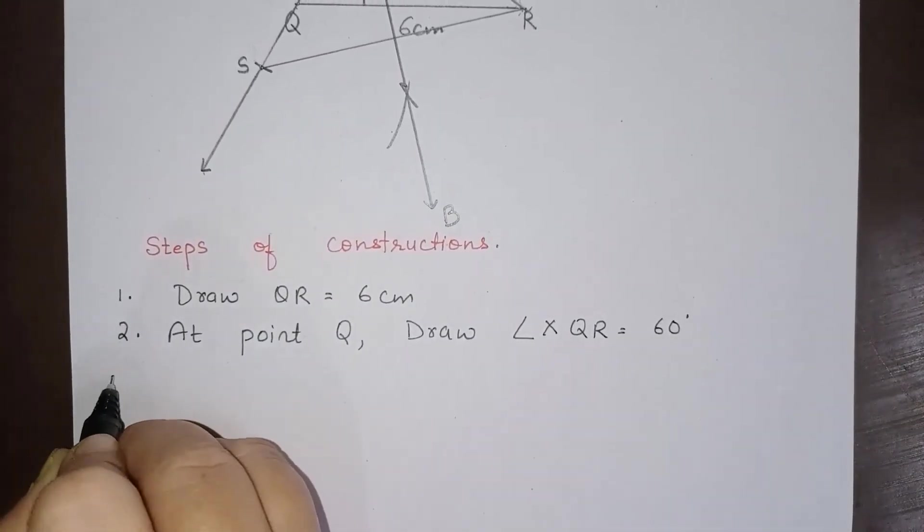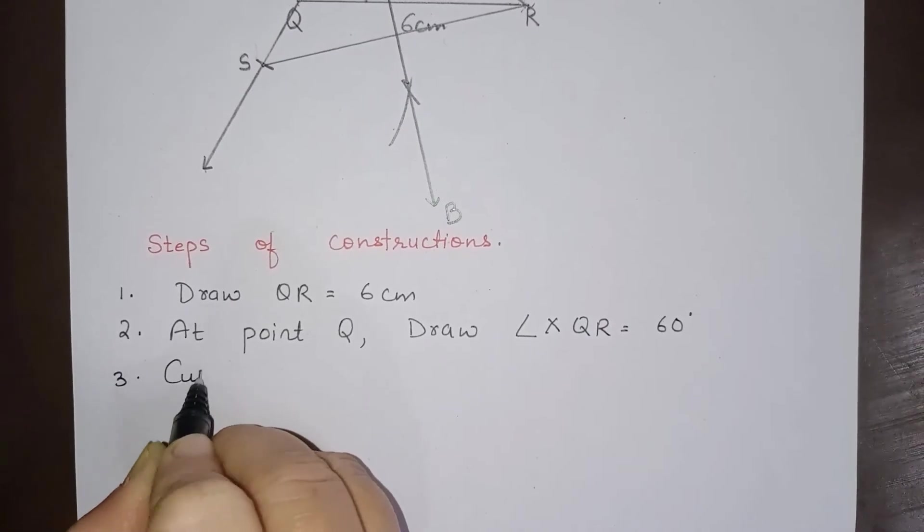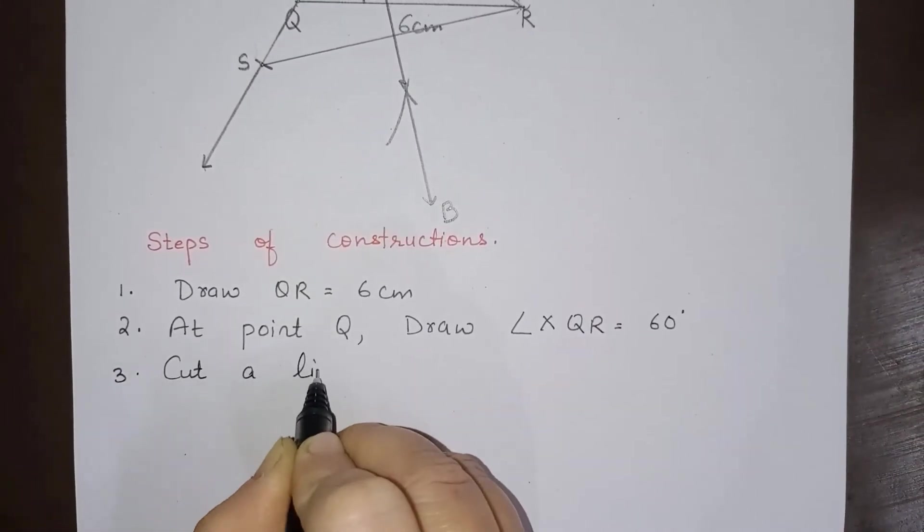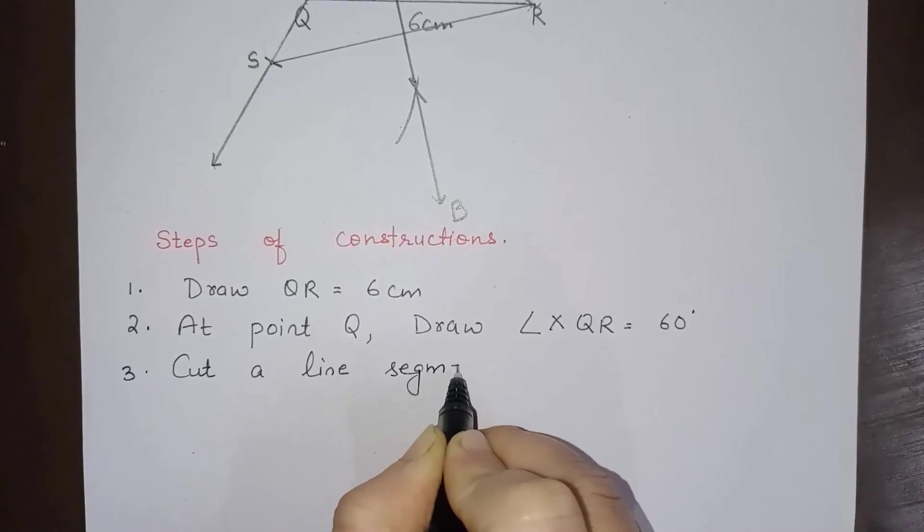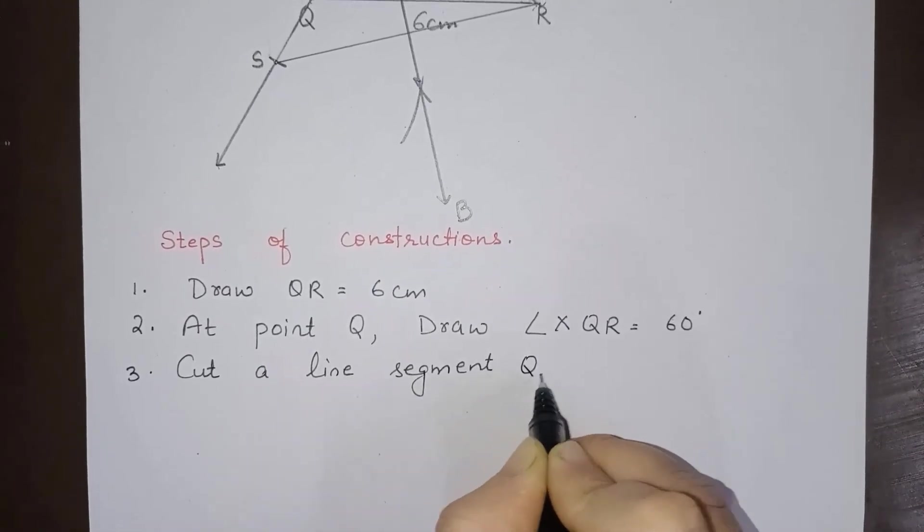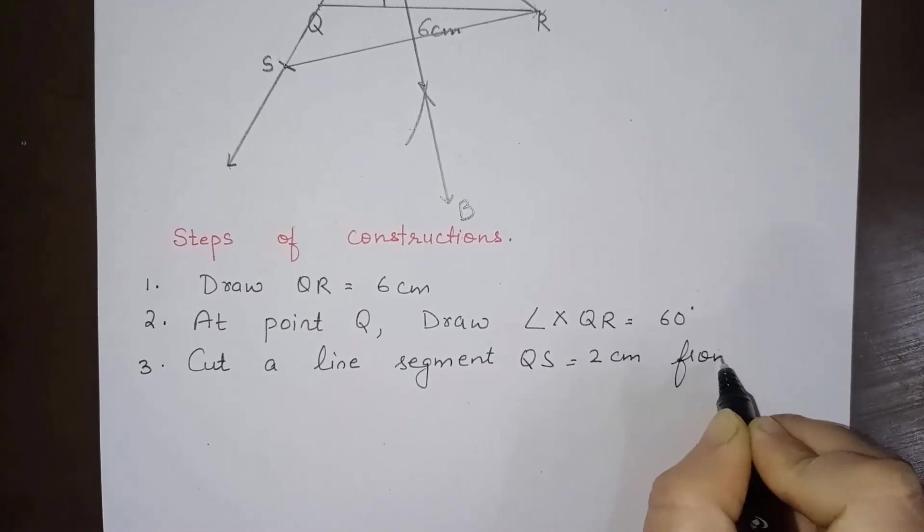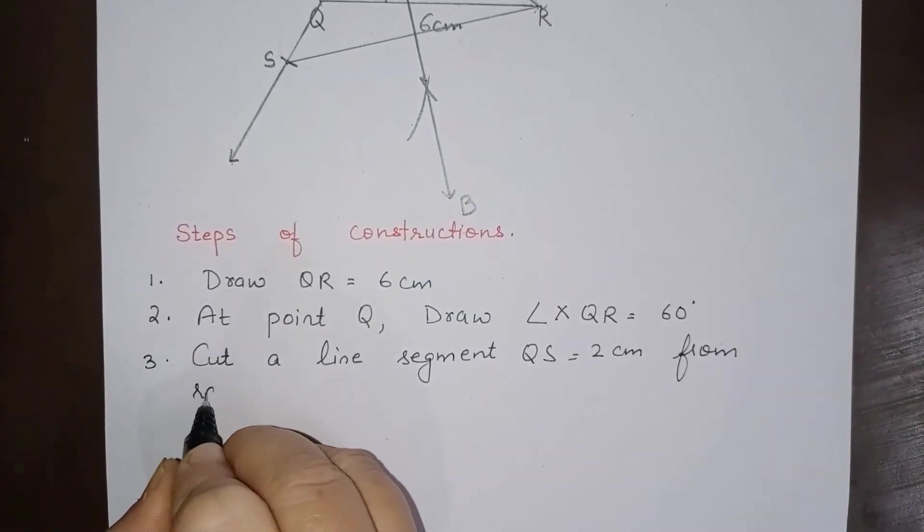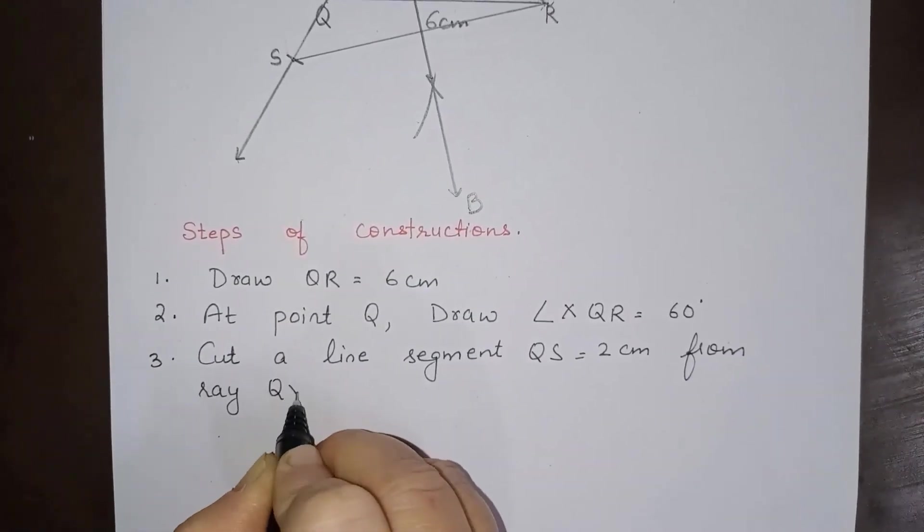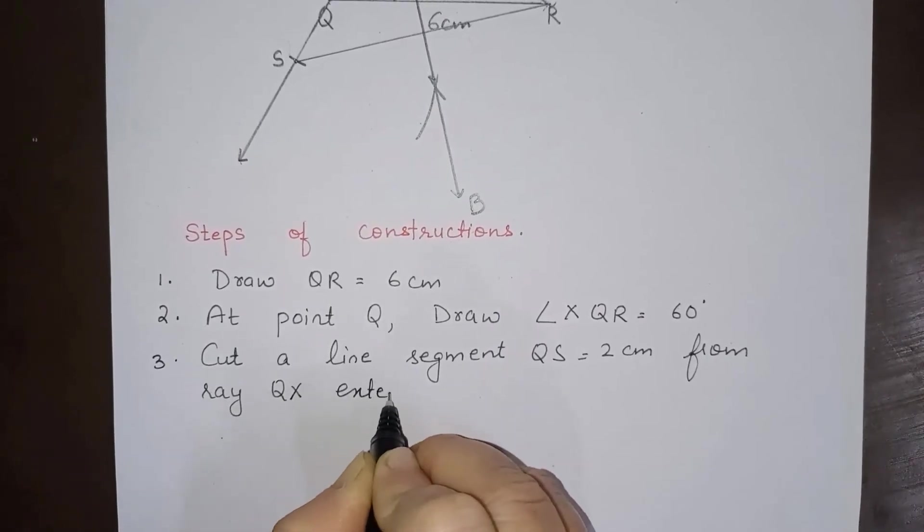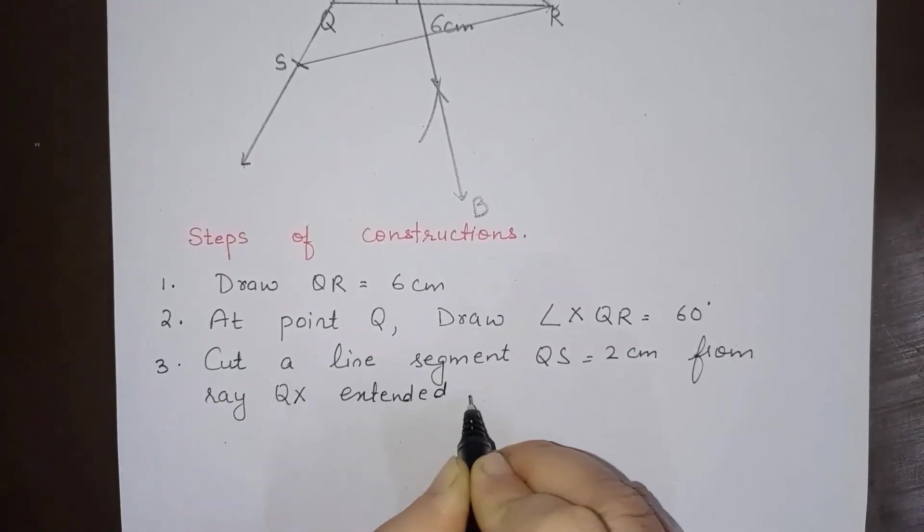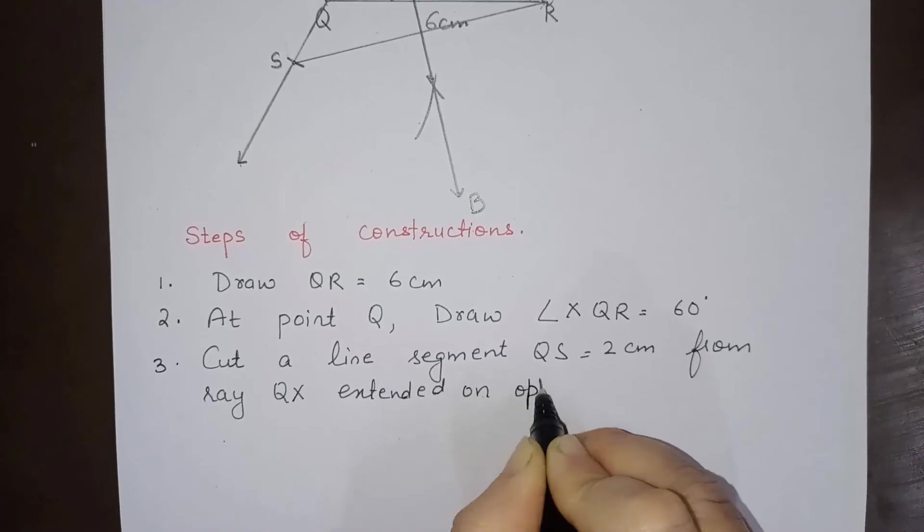Third point: Cut a line segment QS is equal to 2 centimeter from ray QX, extend it on opposite side of line segment QR.